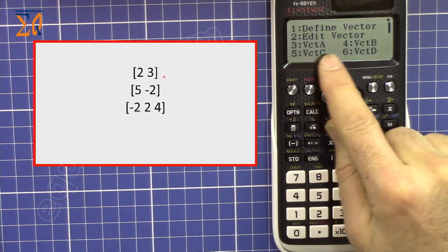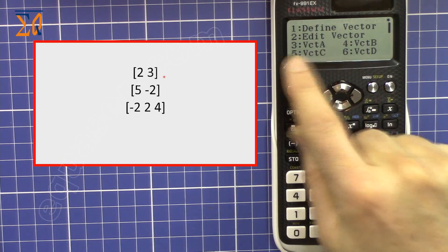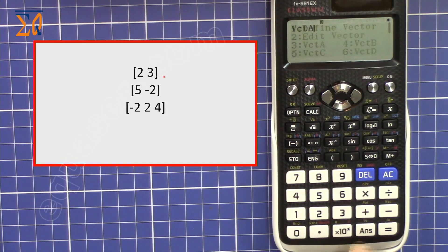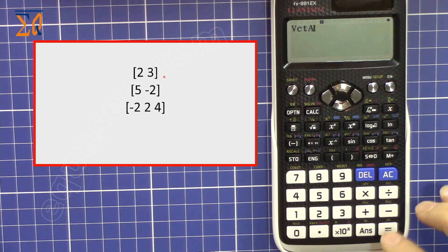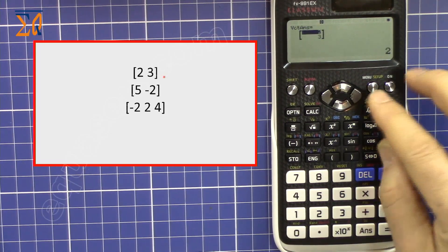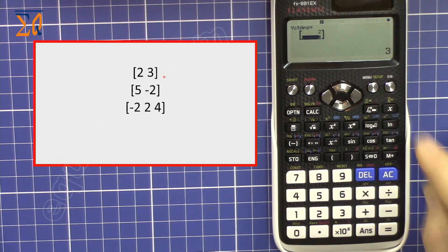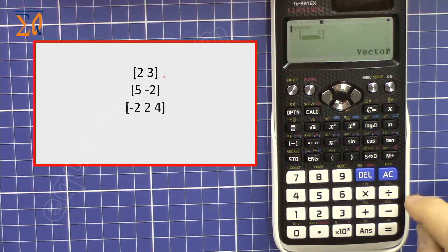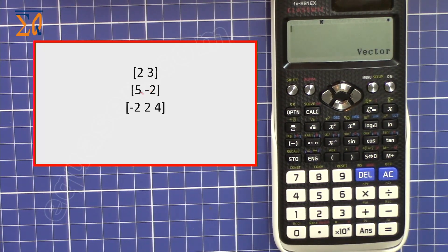To recall or bring back that vector, press Option. On the screen we see vectors A, B, and C. Vector A is number 3, so here I'm pressing equal sign and you can see we can view the vector. Press all clear.